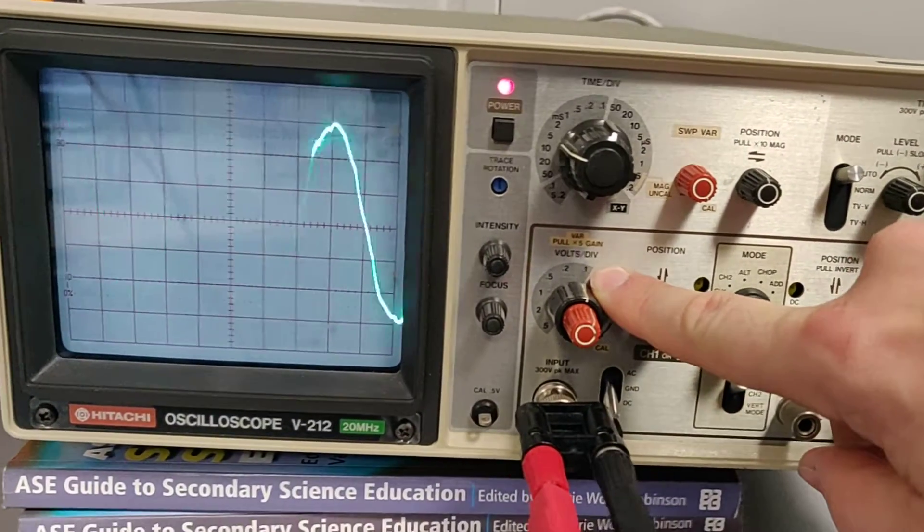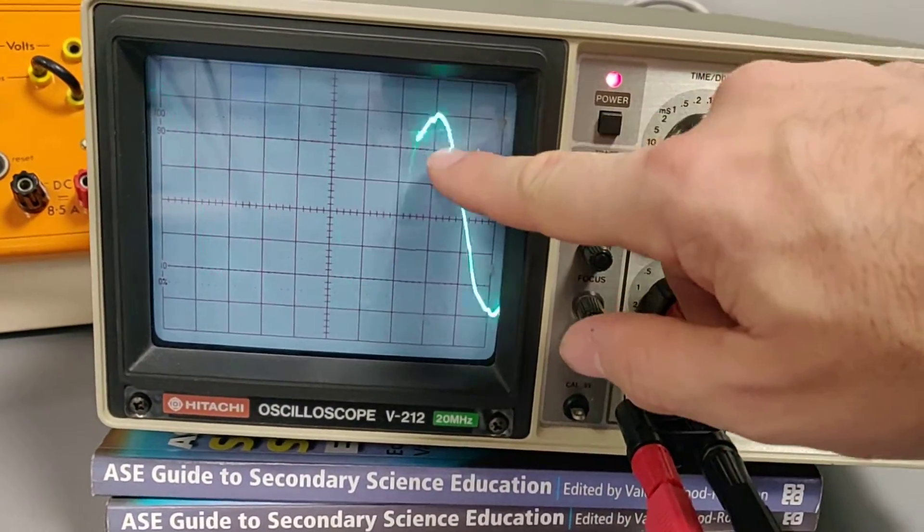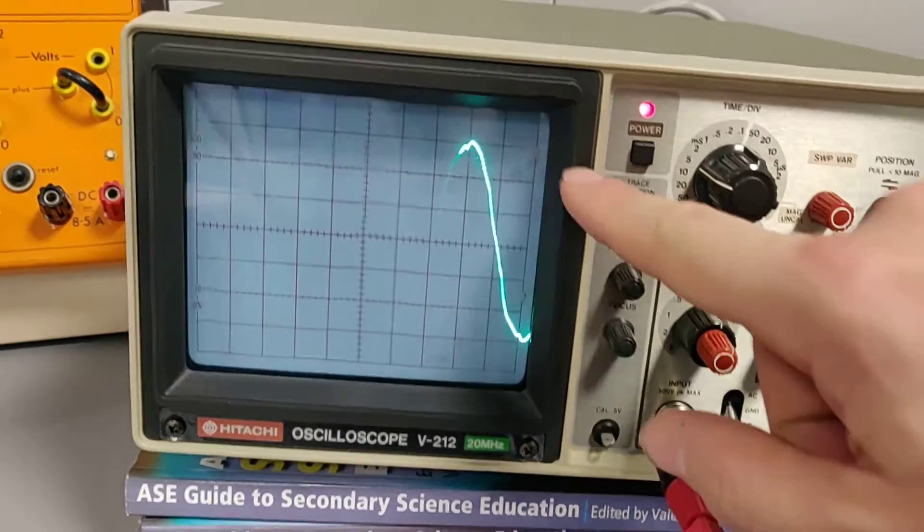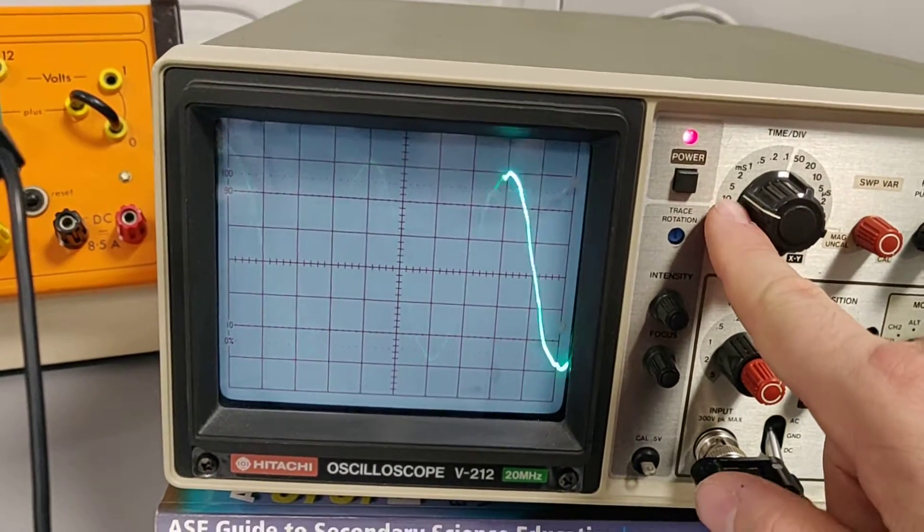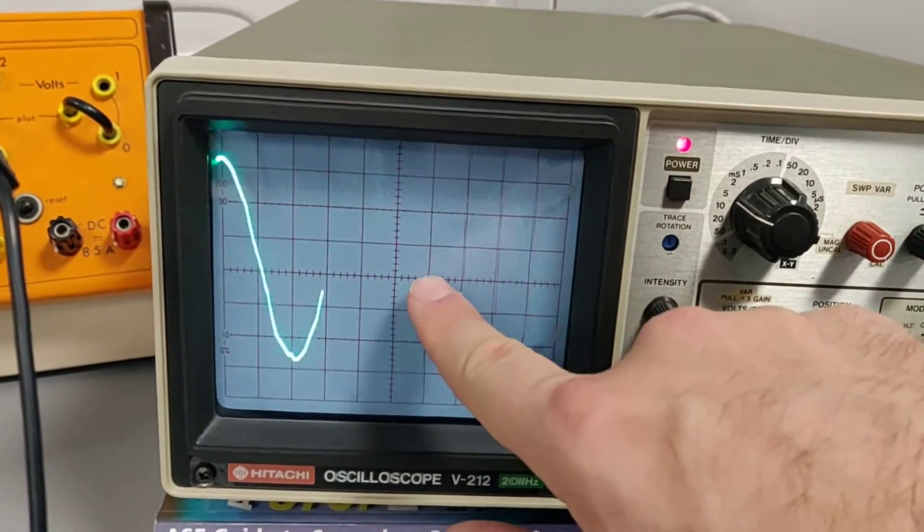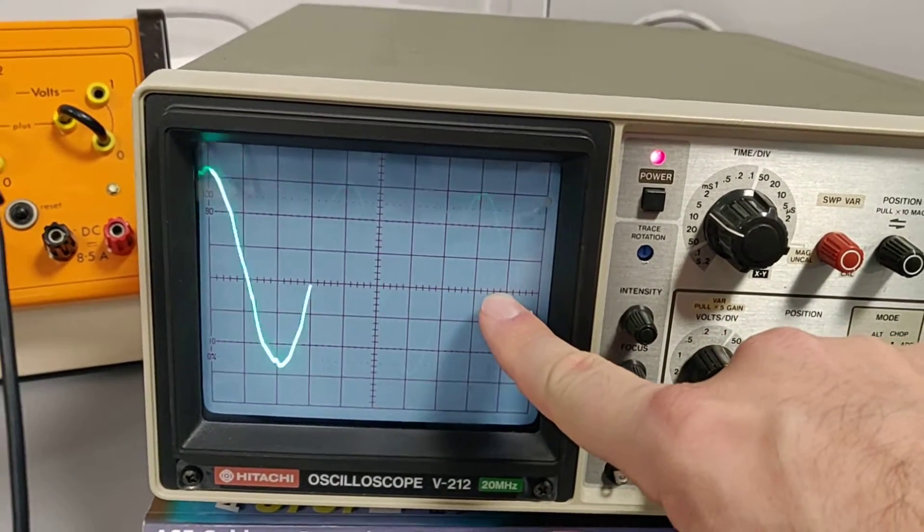But you can see I'm just using one channel of input here. My volts per division is on a setting of 0.1. That means each square here is worth 0.1. My time per division is on 5 milliseconds,